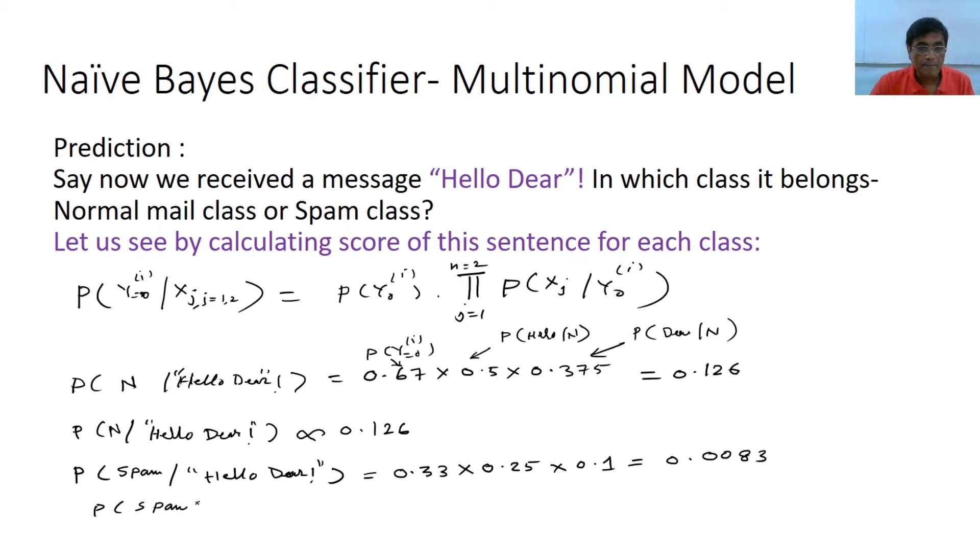So "Hello Dear" is proportional to 0.0083. Now see, so what I will have to do, you will have to put argmax function. So compute argmax function. So given a feature, in which class it belongs, you will have to compute argmax function. What it will give? It will give normal, that it will give y equals to 0.